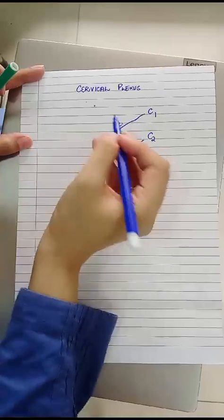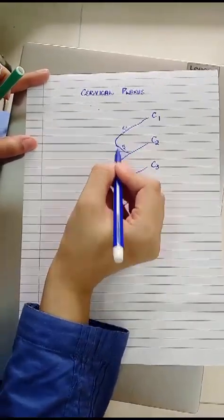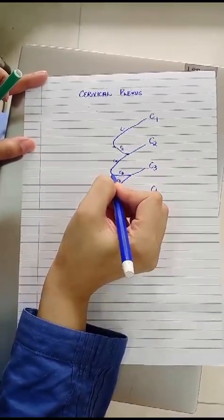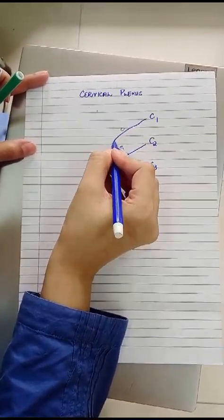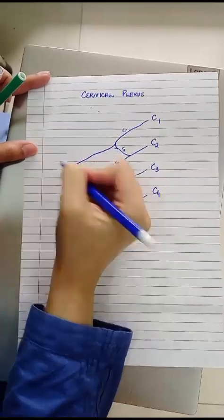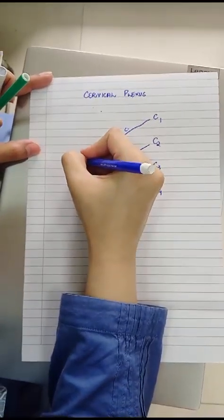After the formation of these loops, now what happens is that these two loops contribute in the formation of ansa cervicalis. In such a way that loop formed between C1 and C2, it contributes to the formation of superior root of ansa cervicalis.